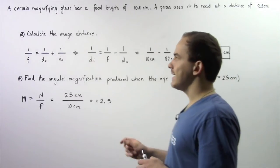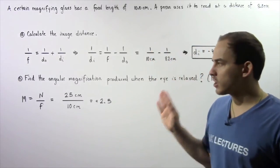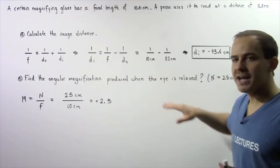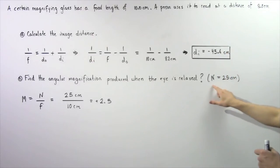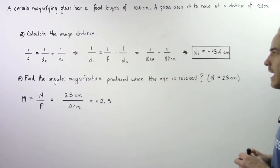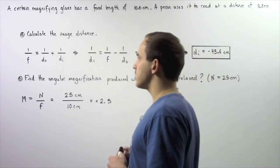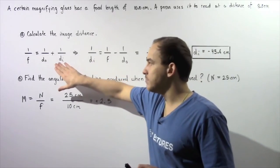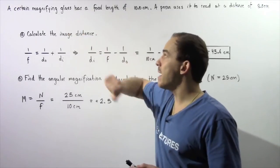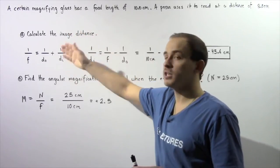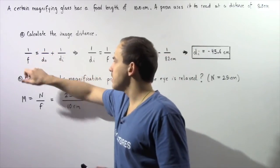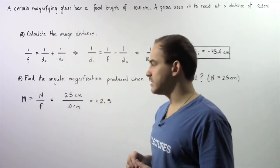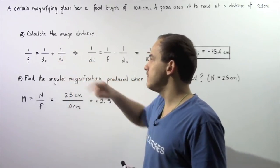In part A, calculate the image distance, and in part B, find the angular magnification of the magnifying glass produced when the eye is fully relaxed. We're assuming the near point of the eye is 25 centimeters. Let's begin with part A. We want to use the thin lens equation because the lens of the magnifying glass is a convex or converging lens. So 1 divided by the focal length is equal to 1 divided by the object distance plus 1 divided by the image distance. We're looking for di, the image distance.